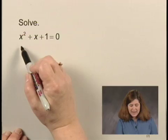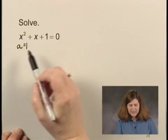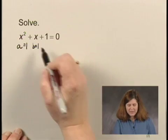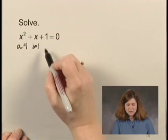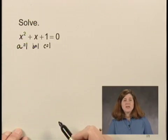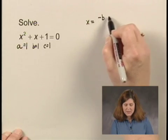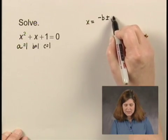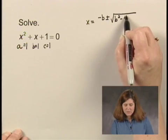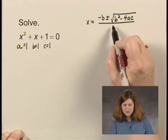In this equation, a is the coefficient of the x squared term, a equals 1, b is the coefficient of the x term, so b equals 1, c is the constant term, so c also equals 1. The quadratic equation is x equals the opposite of b plus or minus the square root of b squared minus 4 times a times c all over 2a.